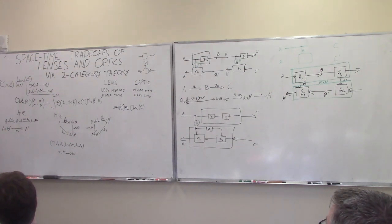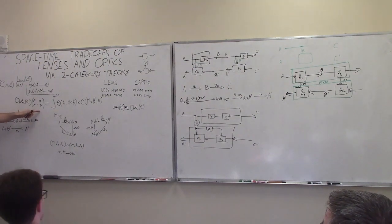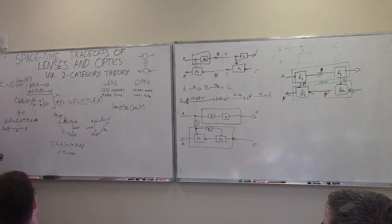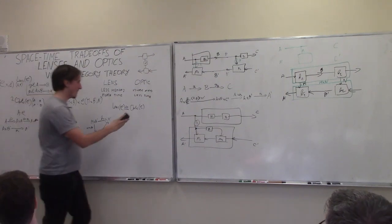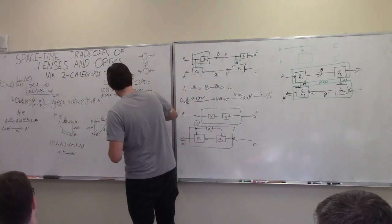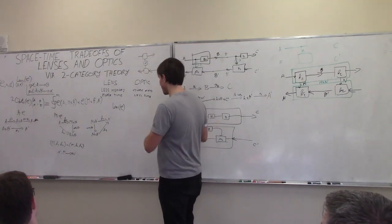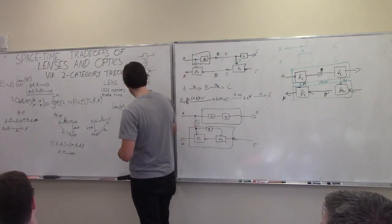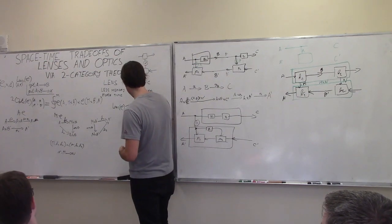The main idea of this talk is that the natural definition for optics is not as a category, but as a two-category. I'm going to write 'two-optic' and draw a square. Instead of writing isomorphism, I'll note this was an isomorphism in Cat — a functor from lenses to optics and a functor from optics to lenses. Now we're going to have two-optic, with maps going this way, and we're going to have an inclusion and a projection that are adjoint.